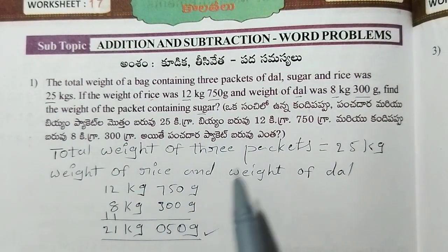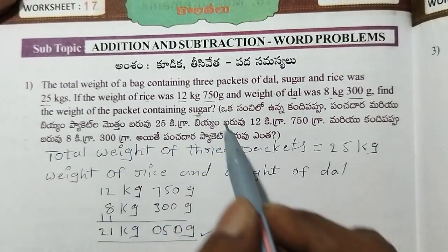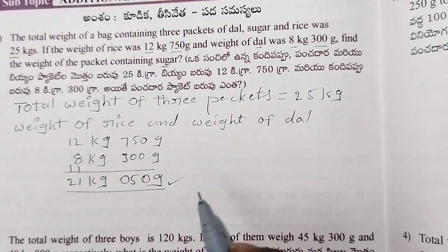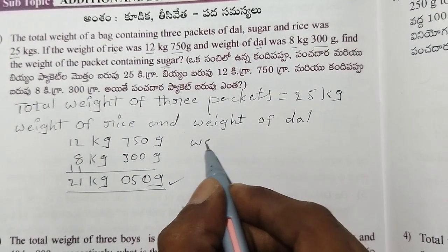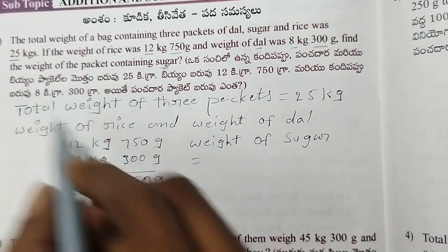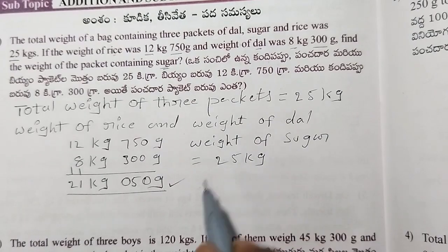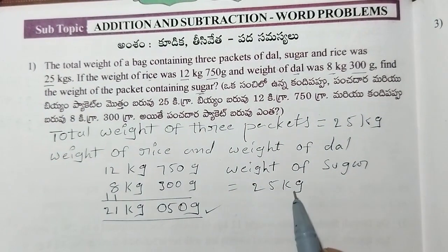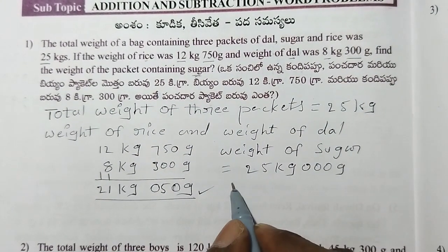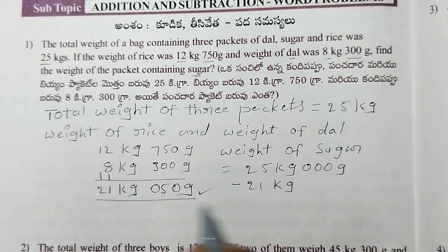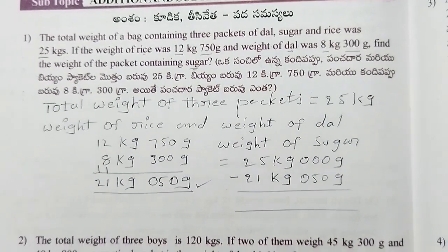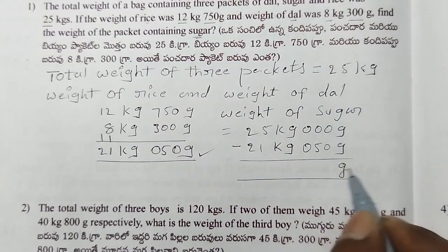The total was 25 kg. So the weight of sugar equals 25 kg minus 21 kg 50 grams, which gives us 3 kg 950 grams.